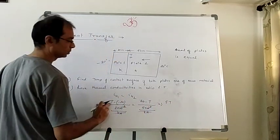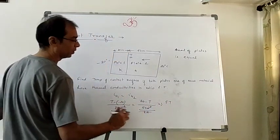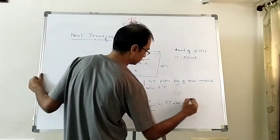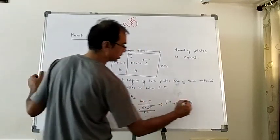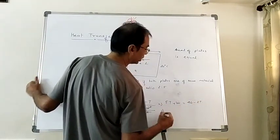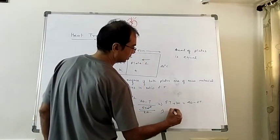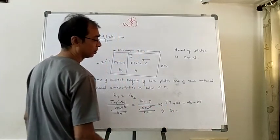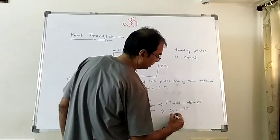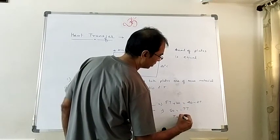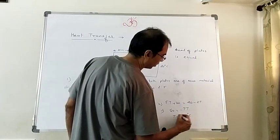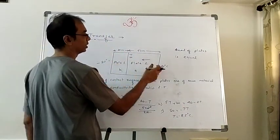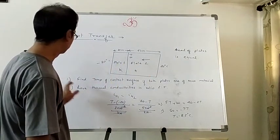After cross-multiplication: 5(T + 20) = 2(20 − T). This gives 5T + 100 = 40 − 2T, so 7T = −60, and T ≈ −8.5°C. So the contact surface temperature is approximately −8.5°C, between −20°C and 20°C as expected.